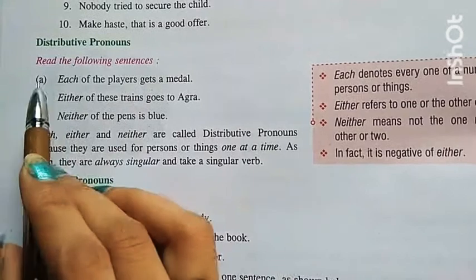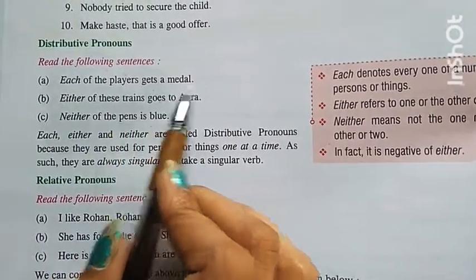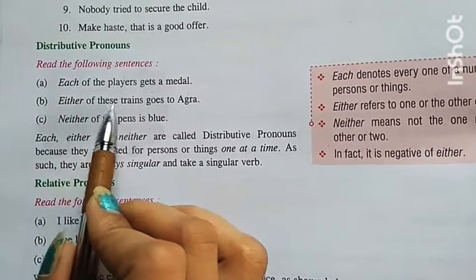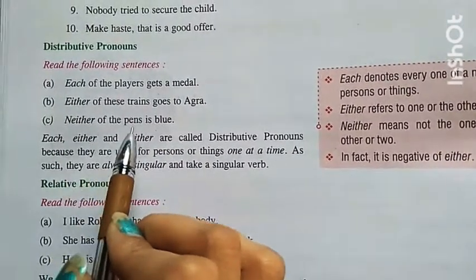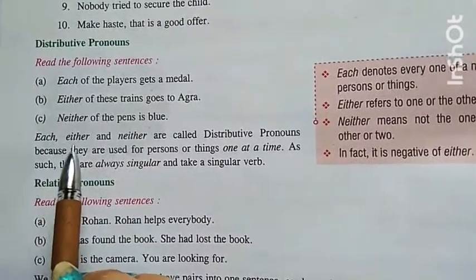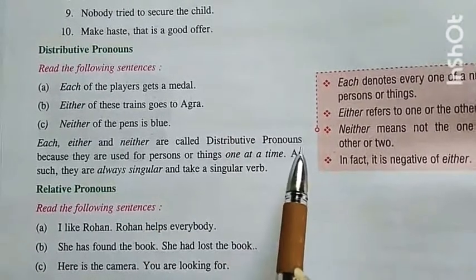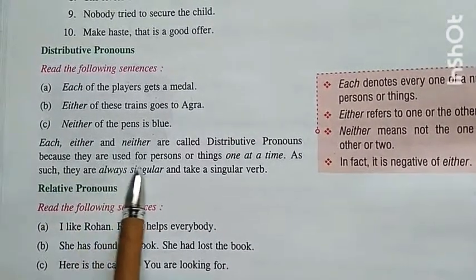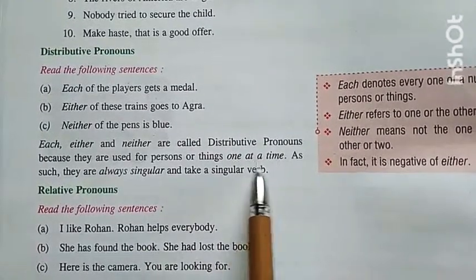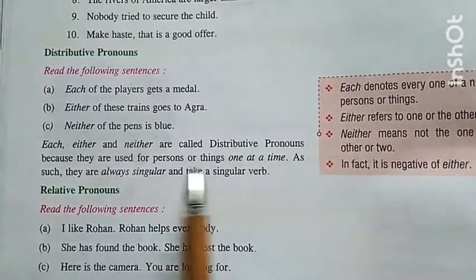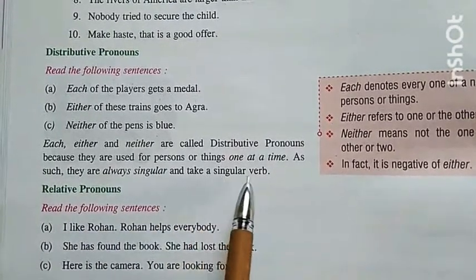Read the following sentences. A: Each of the players gets a medal. B: Either of these trains goes to Agra. C: Neither of the pens is blue. Each, either, and neither are called distributive pronouns because they are used for persons or things one at a time. As such, they are always singular and take a singular verb.